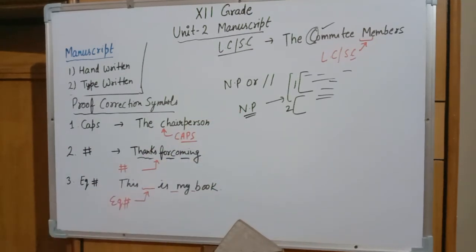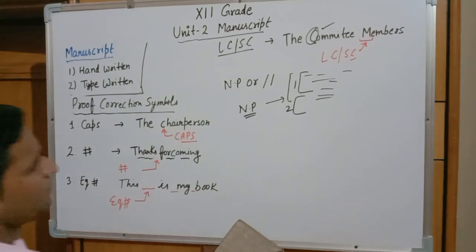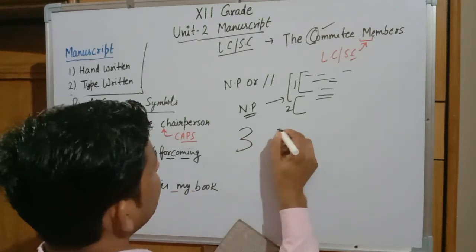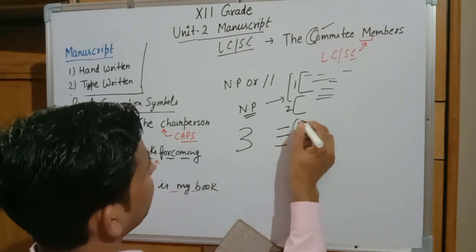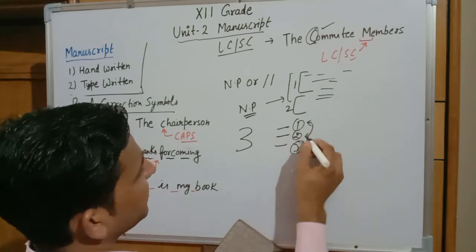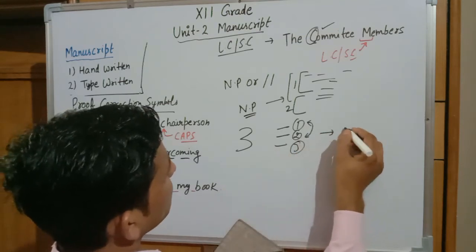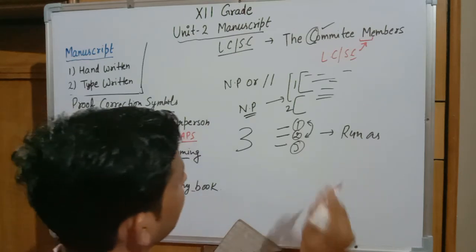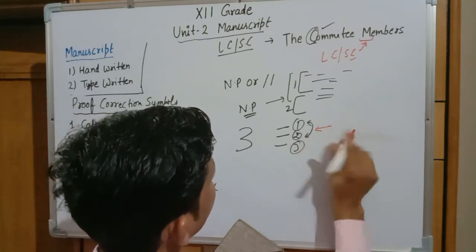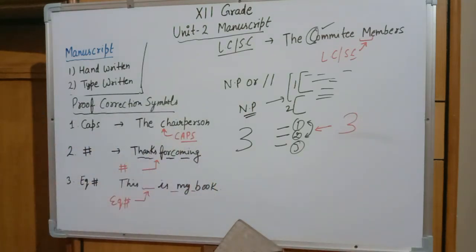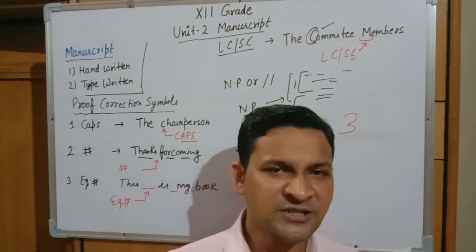The next sign is Run On. This is the opposite of NP. If you have made separate paragraphs — paragraph one, two, three — but the content in paragraphs one and two is related and need not be separate, we combine them. This is known as Run On. We write the Run On sign to indicate that the content should be combined, not kept separate.